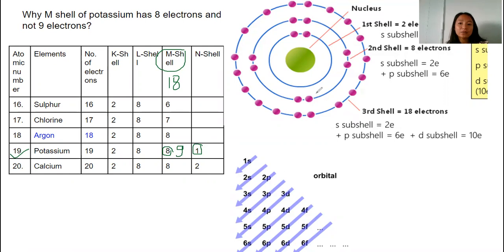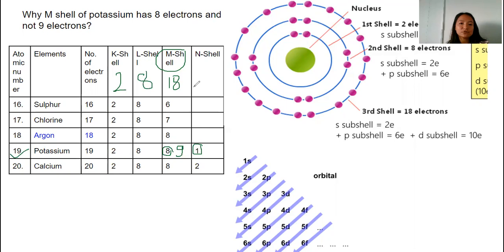Up until now, you have just been informed about shells: K, L, M, and N-shells. K-shell can hold two electrons, L-shell can hold eight electrons, M-shell can hold 18 electrons, and N-shell can hold 32 electrons. This electron-holding capacity is given by the formula 2n².